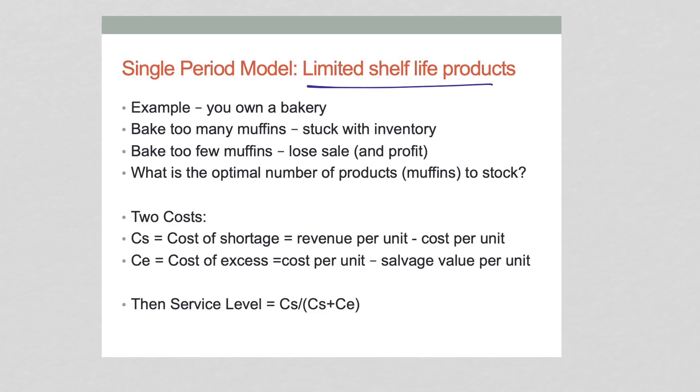We can do that by looking at two costs. The first one is known as the cost of shortage, which is, if you think about it, nothing more than incremental profit. Look at this: the revenue per unit minus the cost per unit. That is cost of shortage. The second is cost of excess if we have too much: the cost per unit minus any salvage value per unit we could get if we're stuck with it.